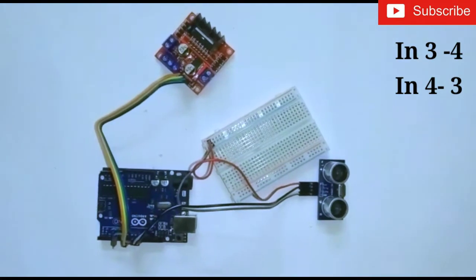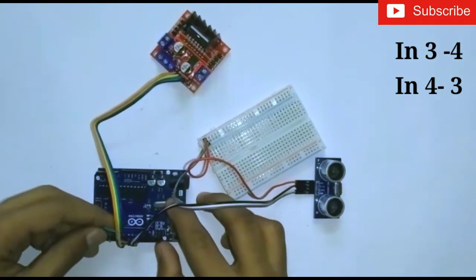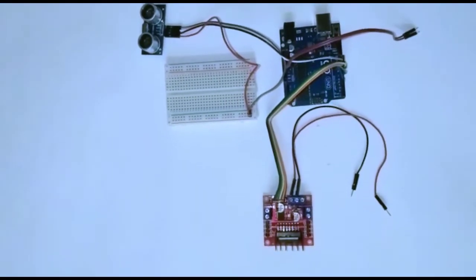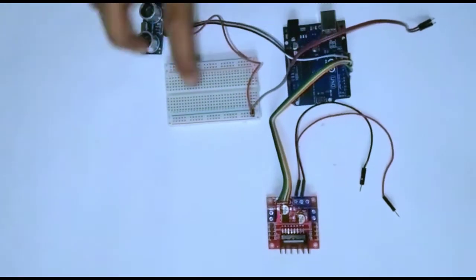Connect the input 4 to digital pin number 3. Now connect the 5 volts and the GND of the motor driver and the Arduino to the breadboard.